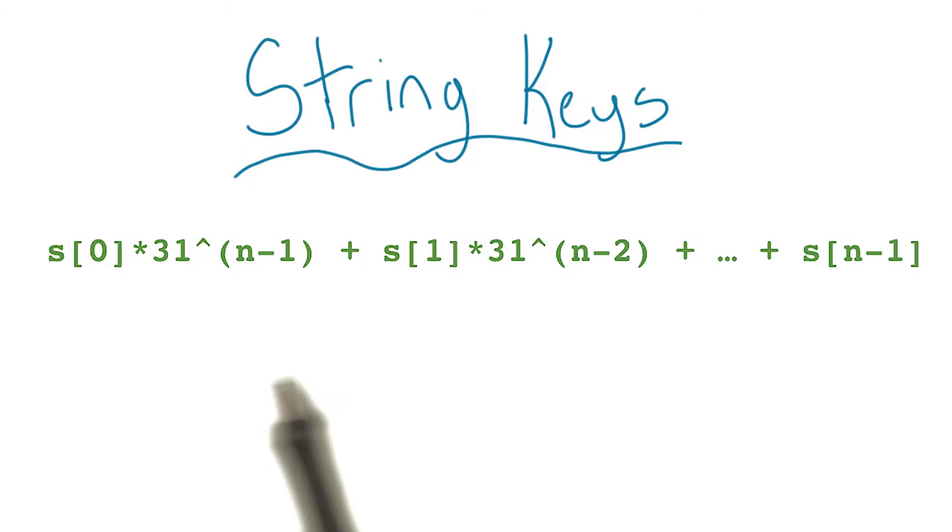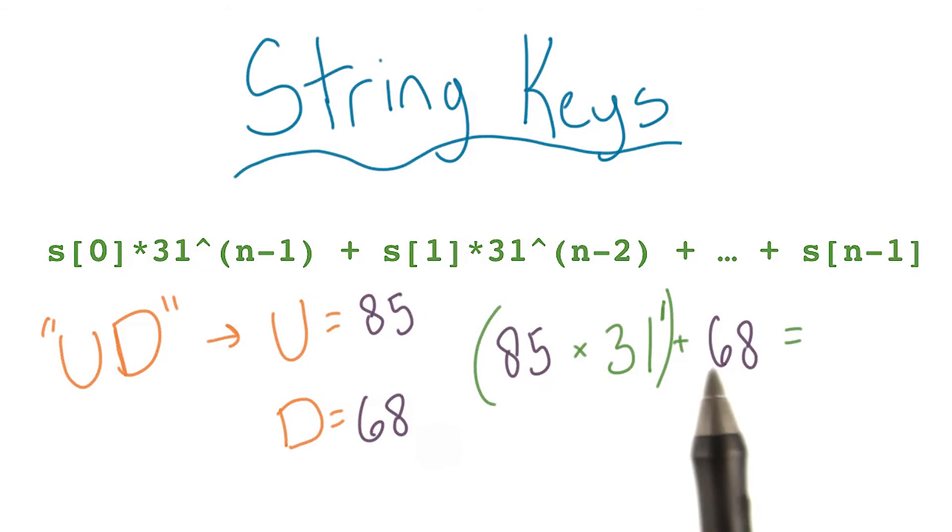The formula looks something like this. For example, let's say we're going to hash the word Udacity, and we're starting with the first two letters of the string, ud. We can plug these ASCII values into the equation to get a hash value that is unique to our string.